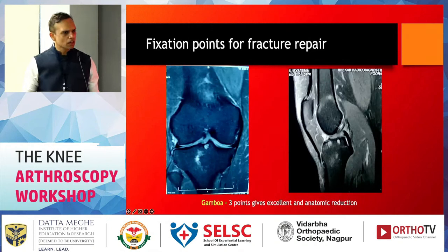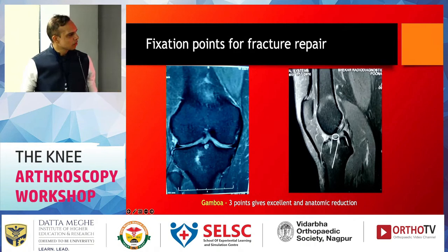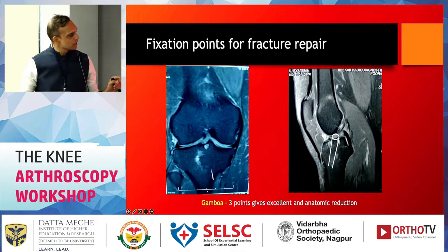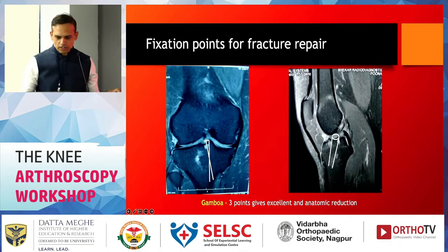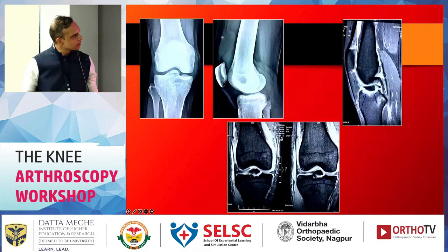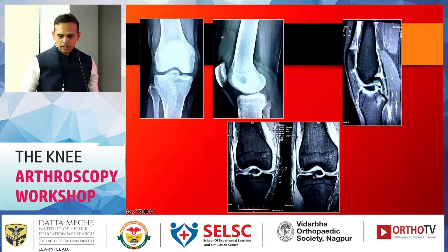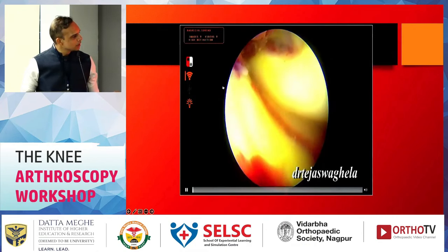This is the standard basic ACL avulsion technique. What you're doing is passing the loop around the ACL and crisscrossing it, which gives a three-point fixation. Let's look at this case example — that's a standard ACL avulsion, the one which we can do.